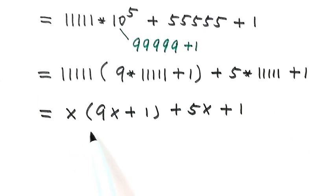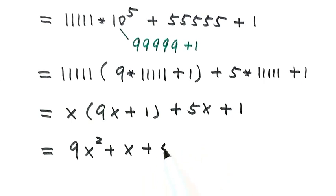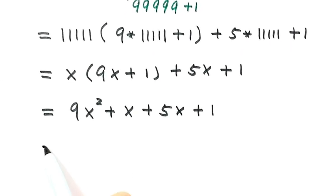Expand the product: nine x squared plus x plus five x plus one. Then simplify: nine x squared, combine these two terms together, that's six x plus one.